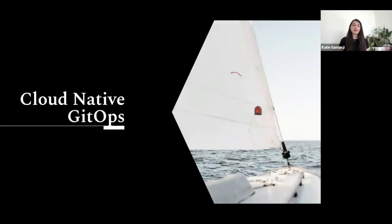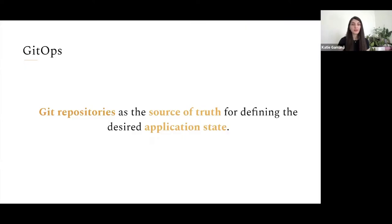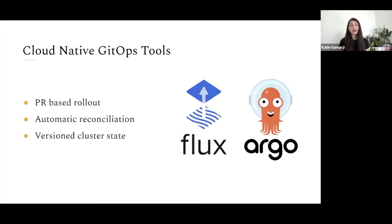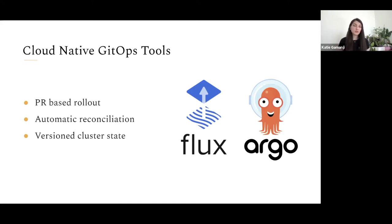The CNCF landscape provides many tools that enable further functionalities and integrations. The community focused on enhancing the developer experience and introducing a new way of deploying cloud native components — and this is how the GitOps model came to be. GitOps is a strategy that uses Git repositories as the source of truth for defining the desired state of the application. By using this model, we have a pull-based rollout, automatic reconciliation where changes in the repository are applied to the cluster straight away, and a versioned state of our cluster for easy rollback.